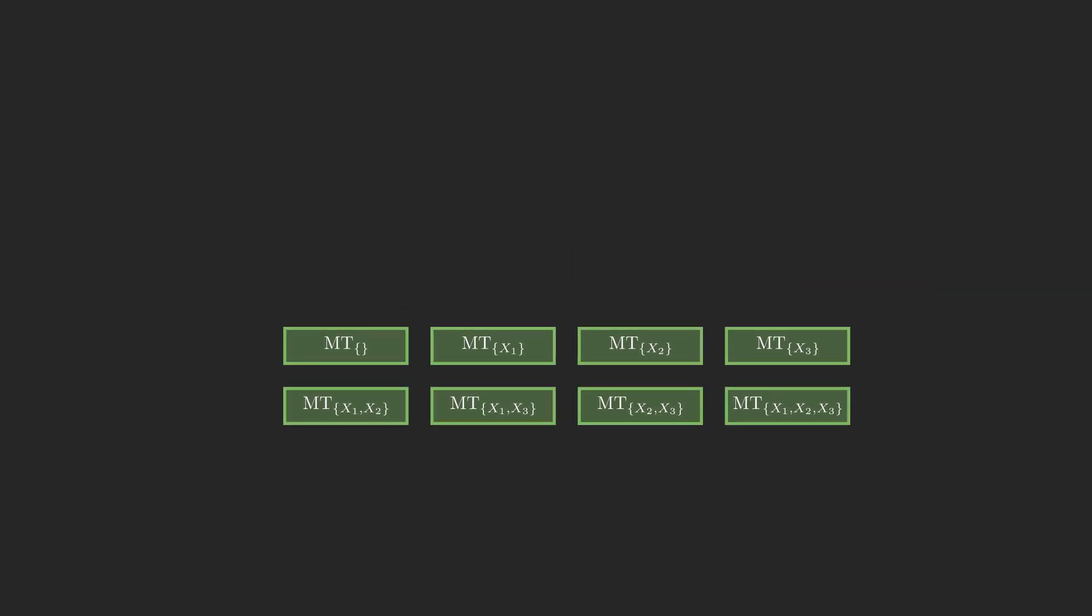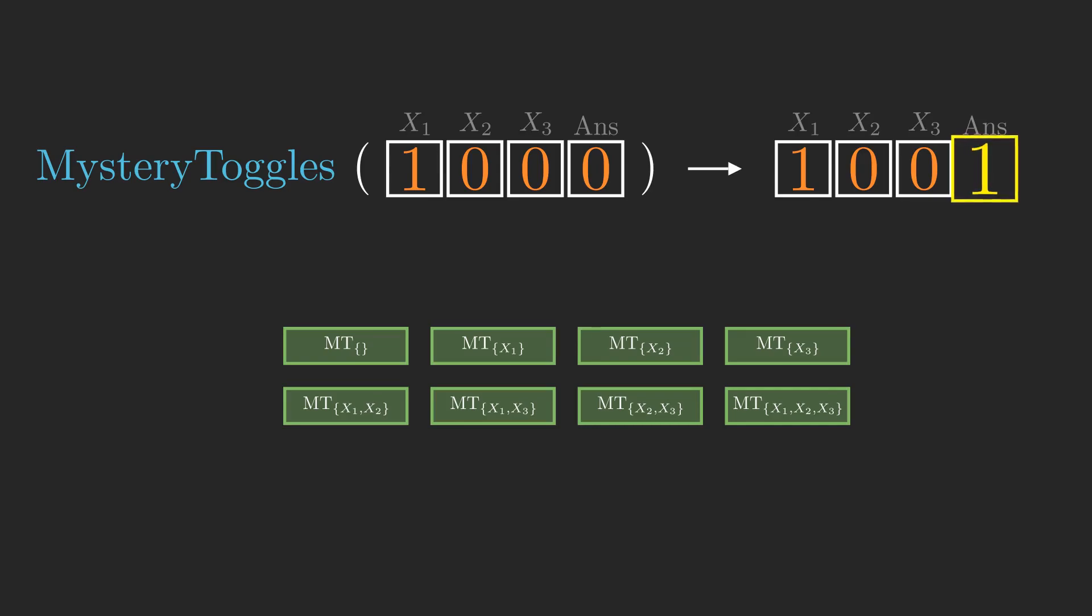One thing you might try is to start with all zeros and toggle, for example, x1. Then suppose we call mystery toggles and answer is 1. This tells us that the line for x1 is present, since answer got toggled.